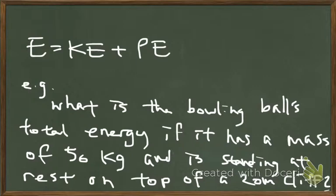To calculate the bowling ball's total energy, we'll use this equation: E = KE + PE. In other words, total energy equals kinetic energy plus potential energy.